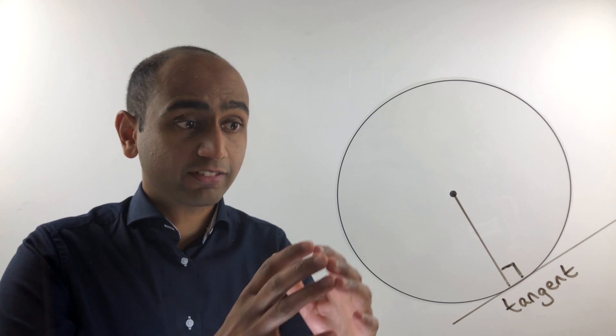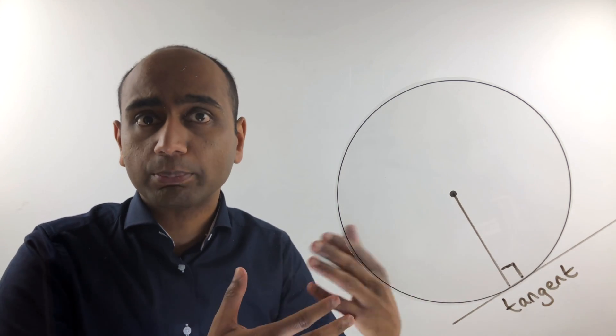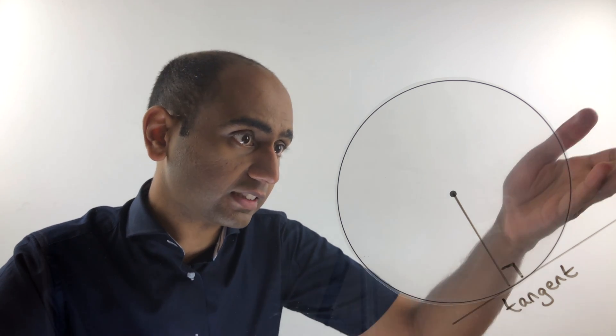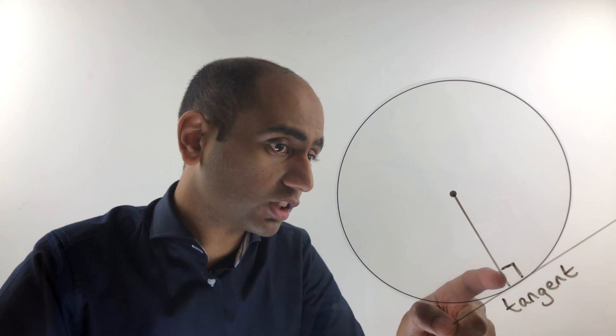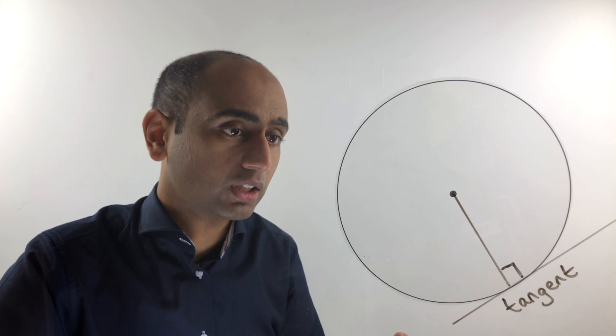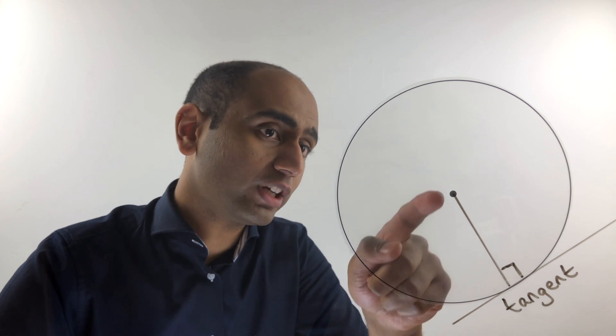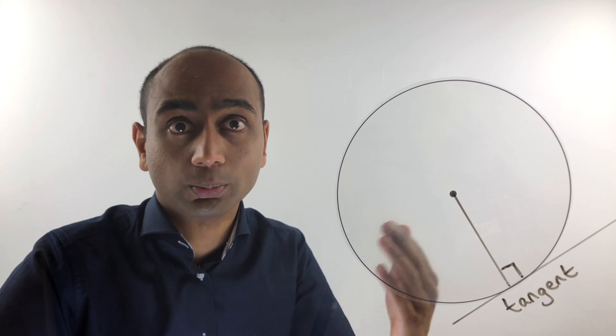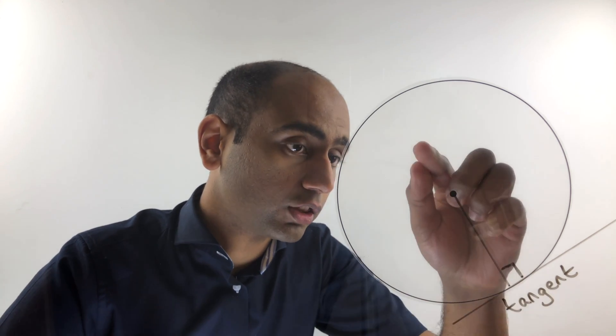Finally we have the tangent. Now this is not really part of a circle, but it is a key word nonetheless. A tangent is a line that touches the circle at just one point. And if we were to draw a radius—so a line from the center to that point where the circle meets the tangent—then the angle between the radius and the tangent will be 90 degrees.